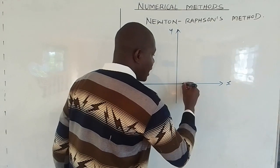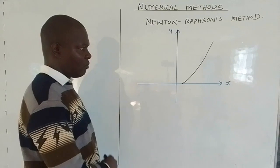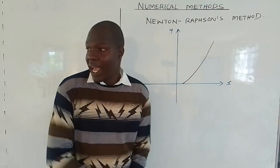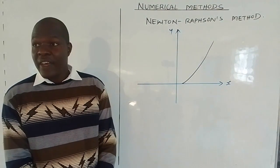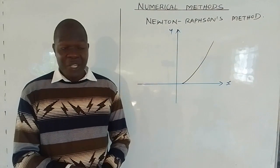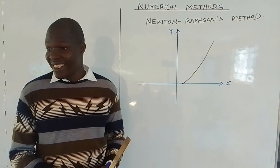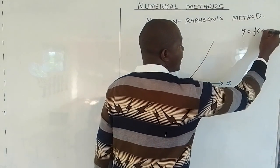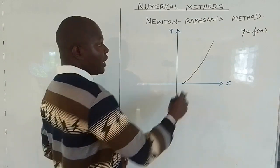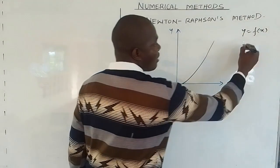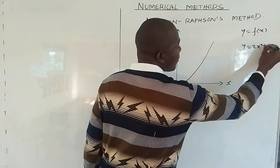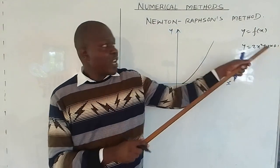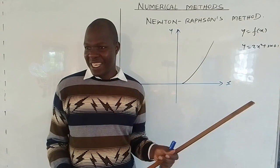If we have a simple curve like this, when dealing with an x-y coordinate system, y is always a function of x in most cases. So if we say here we have a curve where y is a function of x, this curve can be something like y equals x squared minus 3x plus 1, meaning y is expressed in terms of x. So we are saying y is a function of x.